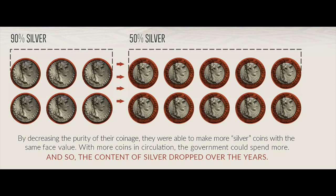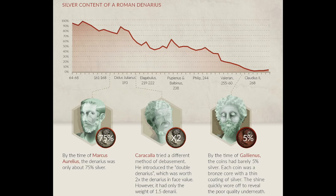This is the same thing as fiat, ladies and gentlemen — the earliest form, the earliest style of inflation and what we would call the inflation tax. With more coins in circulation, the government could spend more. The silver content dropped over the years. By the time of Marcus Aurelius, the denarius was only about 75% silver. Caracalla tried a different method of debasement — he introduced the double denarius, worth twice the denarius in face value, but containing only the weight of one and a half. By the time of Gallienus, the coins had barely 5% silver — each coin was a bronze core with a thin coating of silver, and the shine quickly wore off to reveal the poor quality underneath.